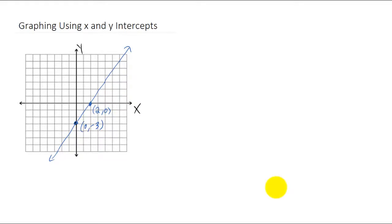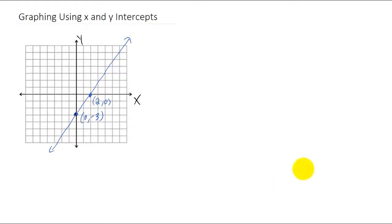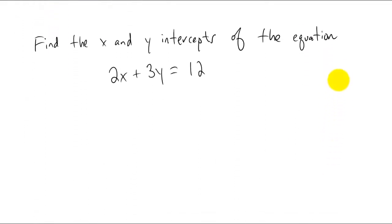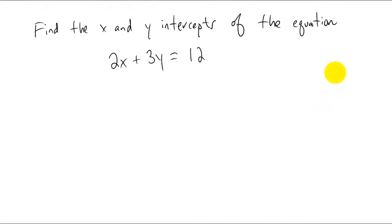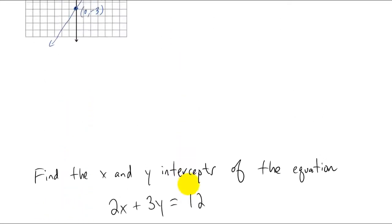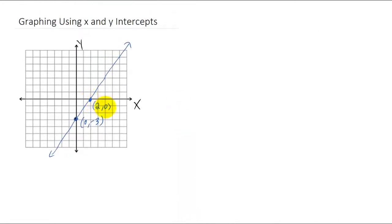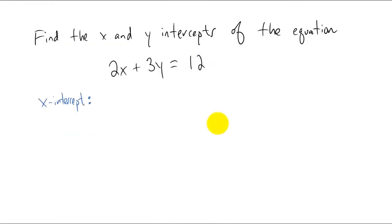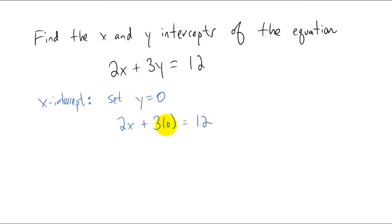But what if we weren't given a graph of a line? What if we were just given the equation of a line? What if we wanted to find the x and y intercepts of the equation 2x plus 3y equals 12? To find the x-intercept, we can use the knowledge that we gained from looking at the graph above. We know that for all x-intercepts, the y value is going to be zero. So what we can do to find our x-intercept is set y equal to zero.